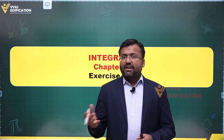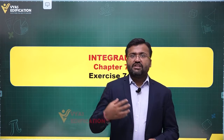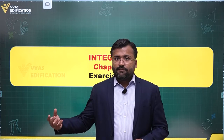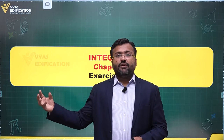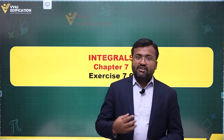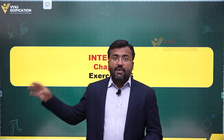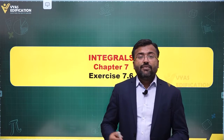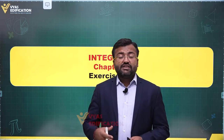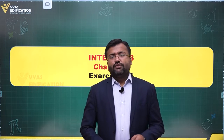Integration by parts is not a difficult method. The integral of f(x)·g(x) dx — the integral of a product of two functions — equals the first function times the integral of the second function, minus the integral of the derivative of the first function times the integral of the second function. So you keep the first function constant, integrate the second, then differentiate the first, integrate the second, and take the big integral of that product.